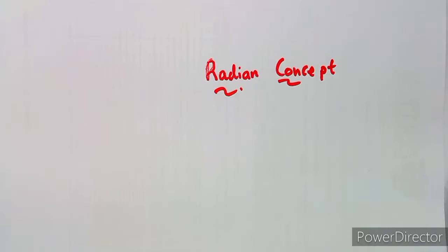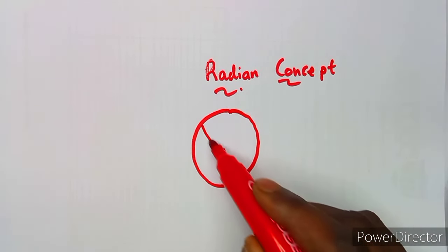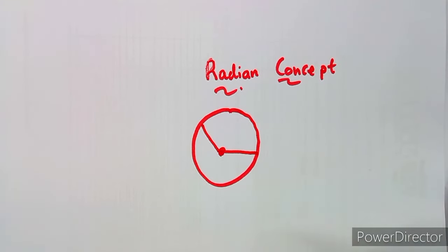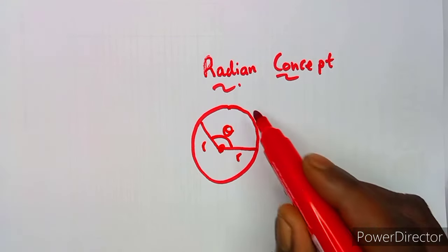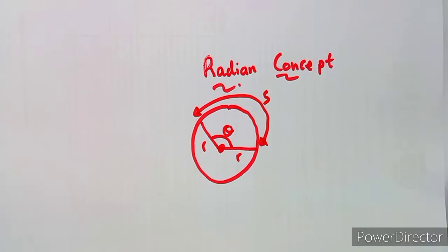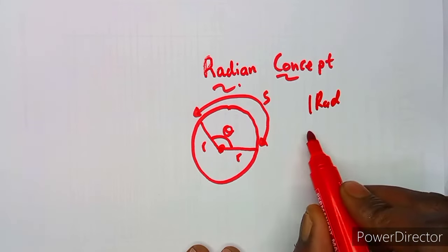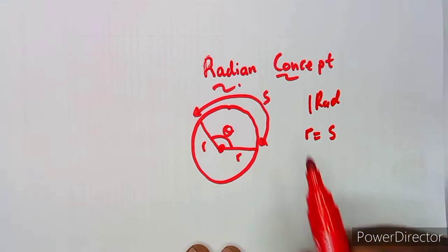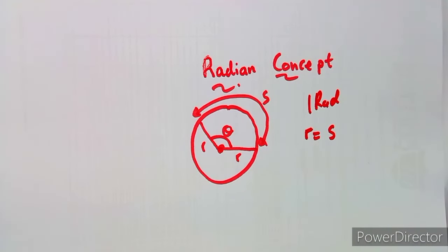What does this radian concept define? You will actually be given a circle, with a given radius and an angle theta measured in radians, and here you'll have the distance between the two points, which is actually the length of the arc. On the condition that we have an angle of one radian, it can only be achieved when the arc length is equivalent to the radius.